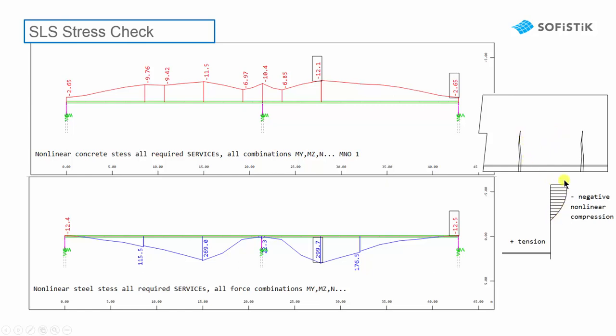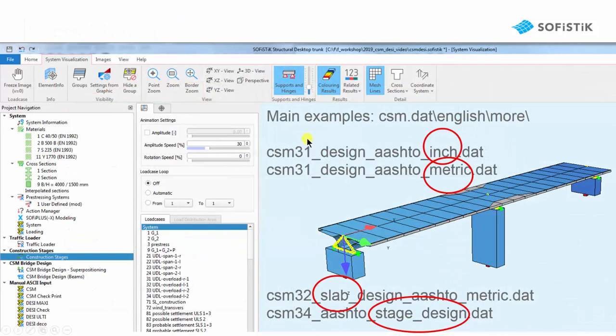So a nonlinear work law for the concrete and a cracked concrete. Due to cracking, of course, the tension in the reinforcement and the tendons increases. We see here the nonlinear steel stress of all required services. We have prepared four different examples.